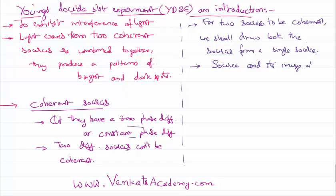Two sources are coherent when they are drawn from the same source. We can also use a source and its image as two coherent sources. So if we use a source or its image as two coherent sources, then we can experience interference.